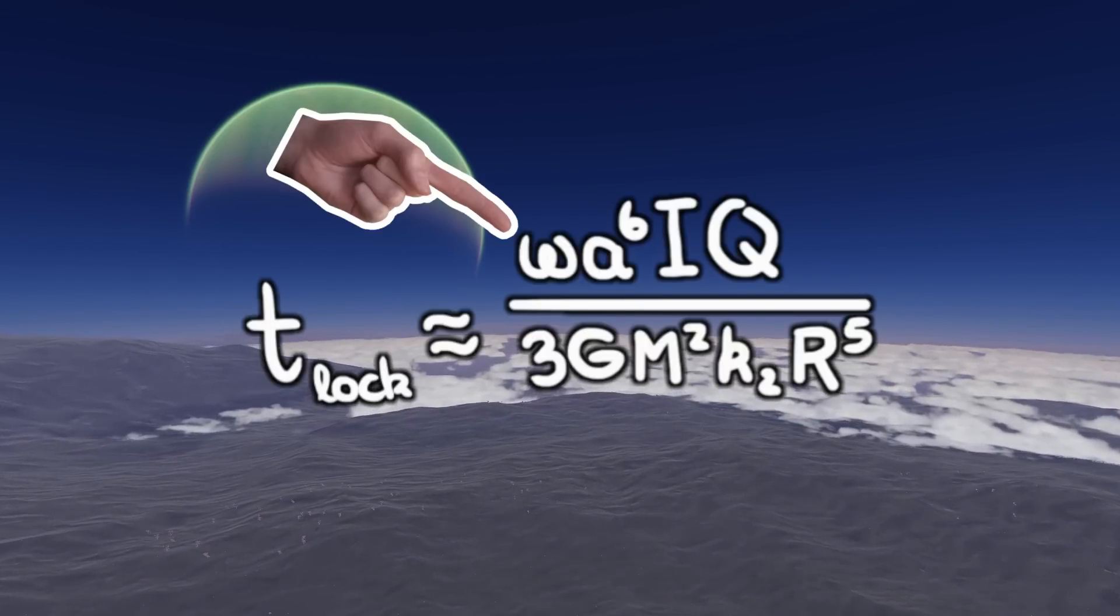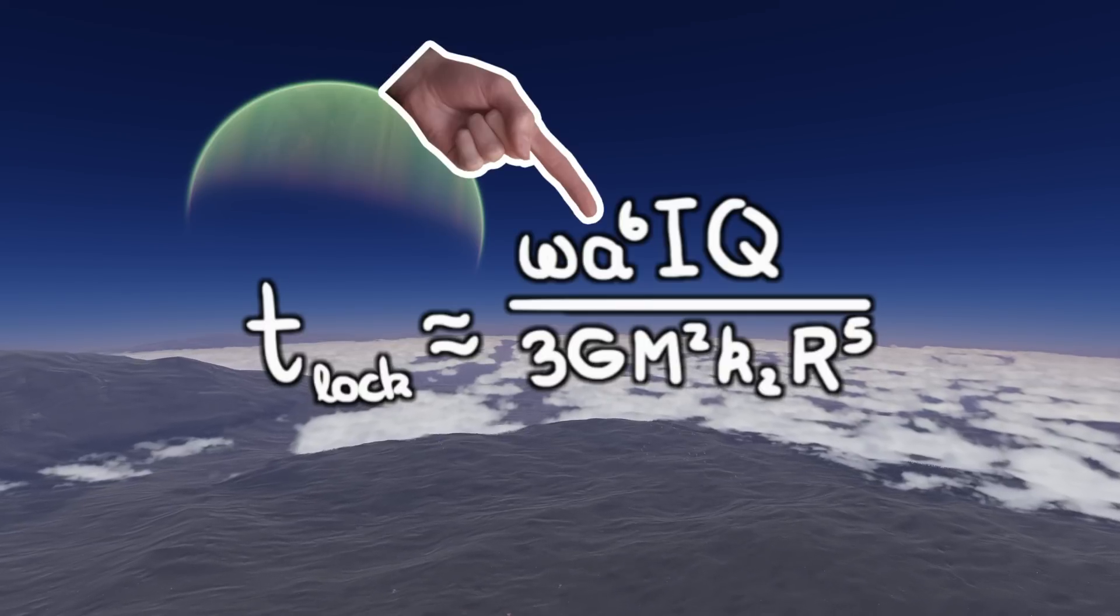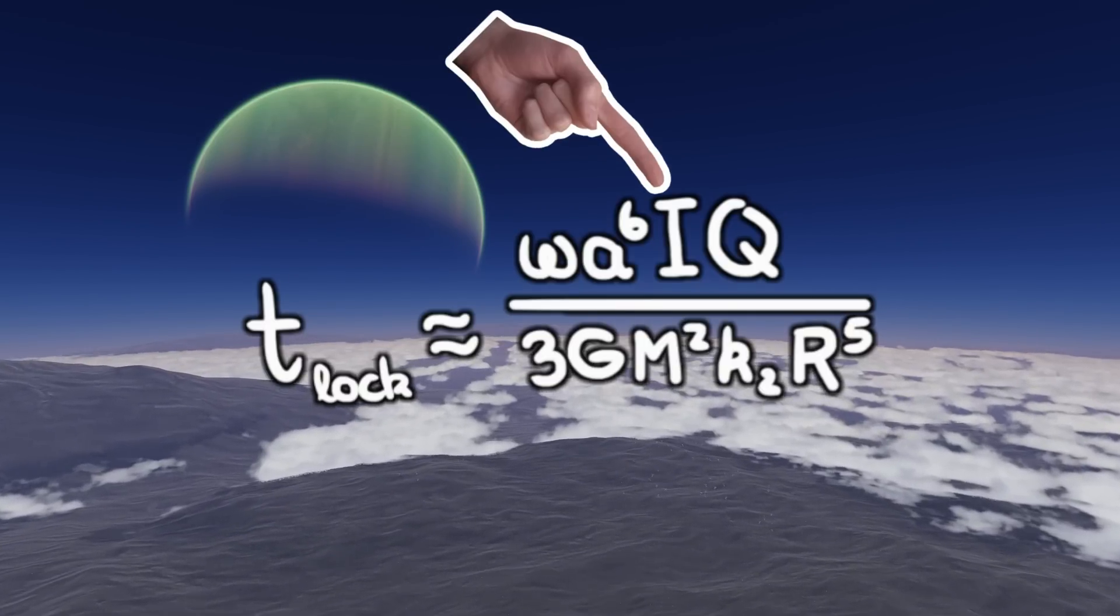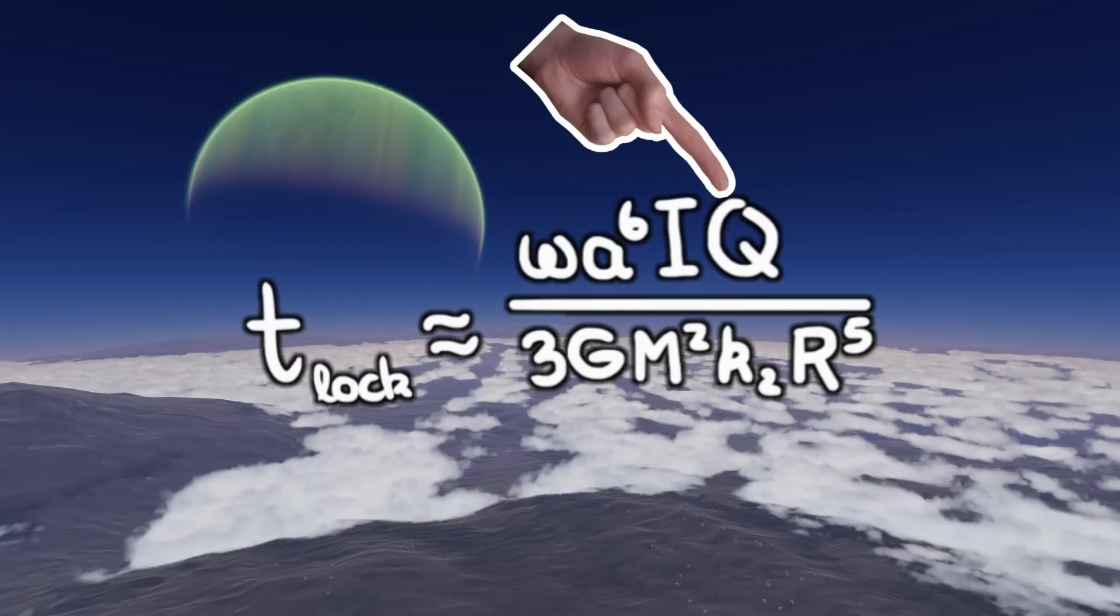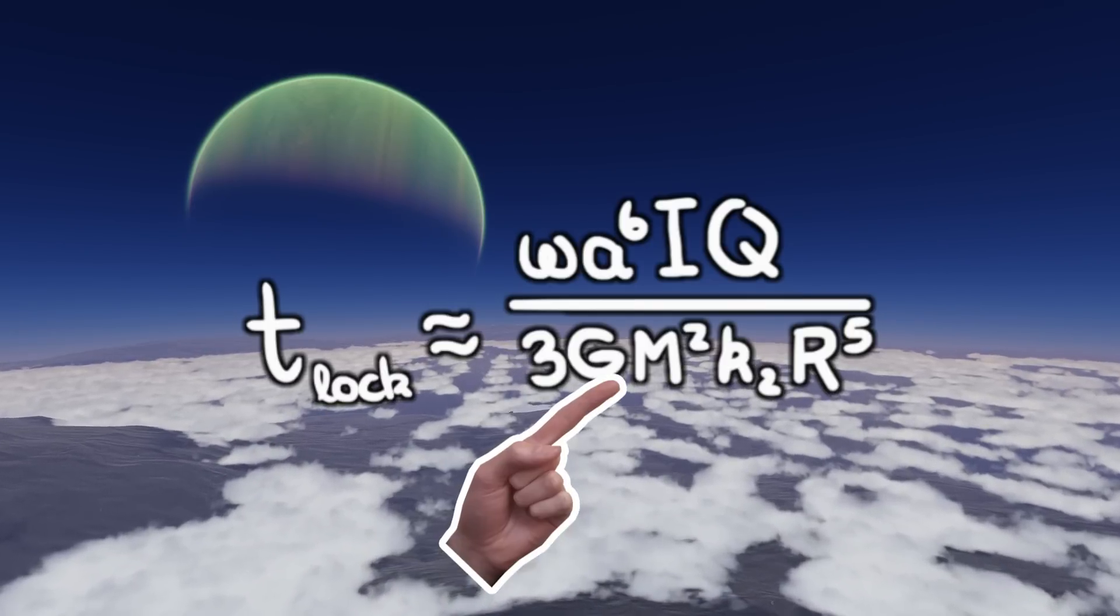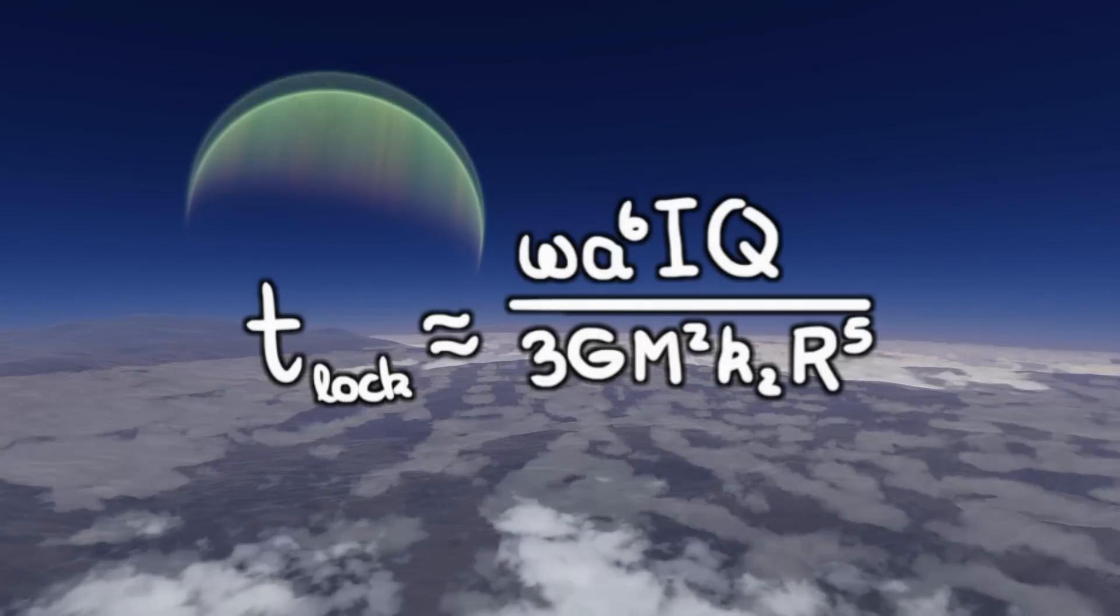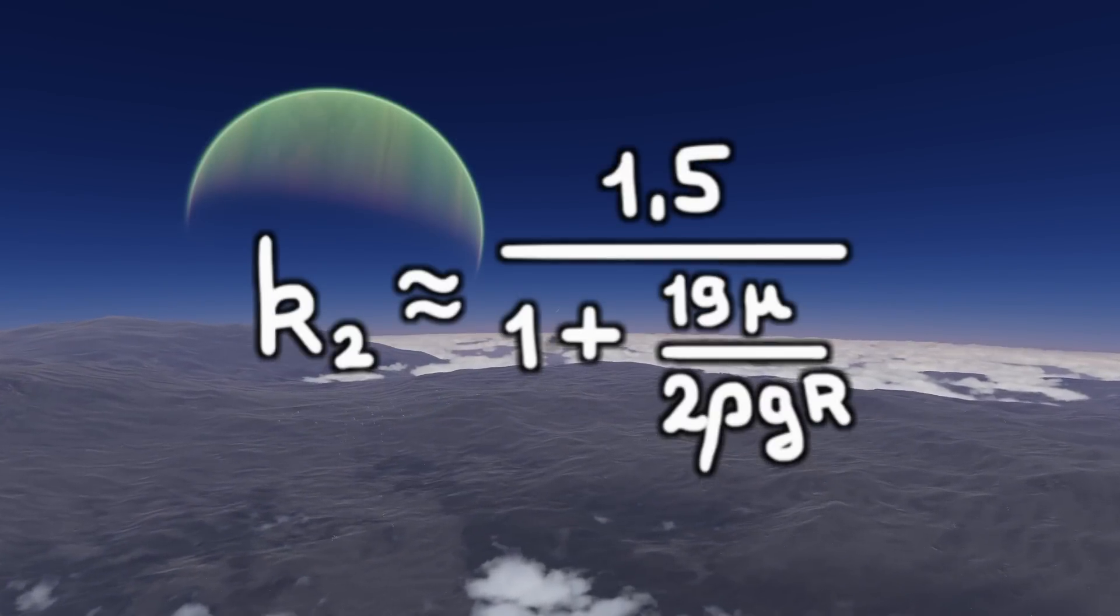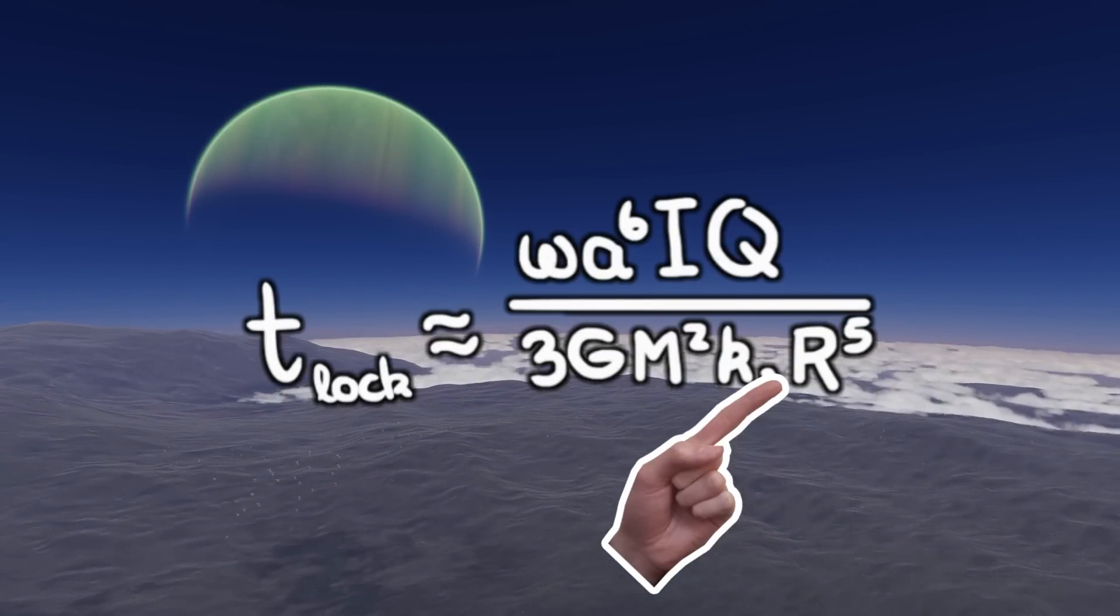So this omega is the initial spin rate. A is the semi-major axis of the satellite. I is the inertia of the satellite. Q is the dissipation function of the satellite, which is assumed to be about 100. This is the gravitational constant. Capital M is the mass of the planet. K2 is the love number of the satellite, and can be approximated using this equation. And lastly, R is the radius of the satellite.